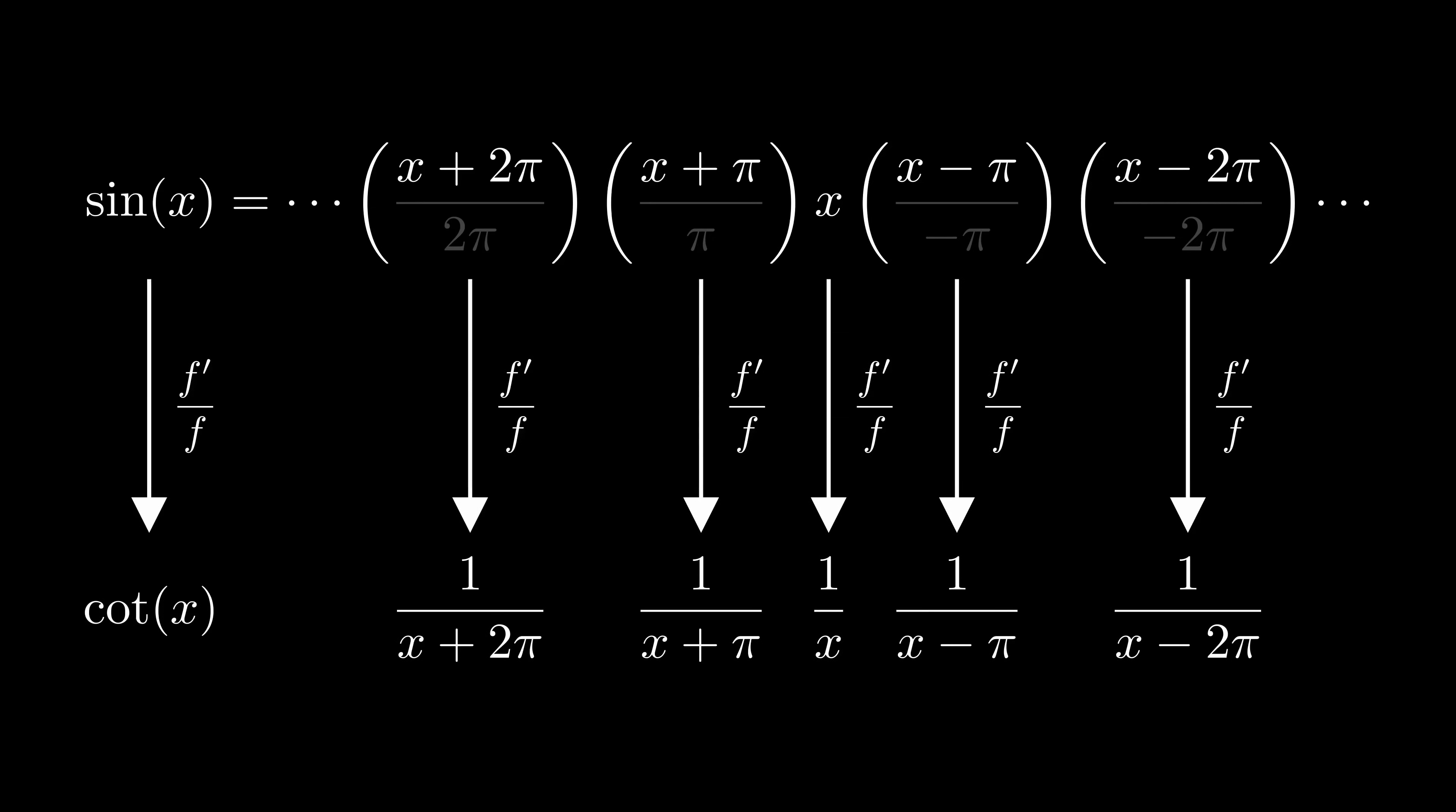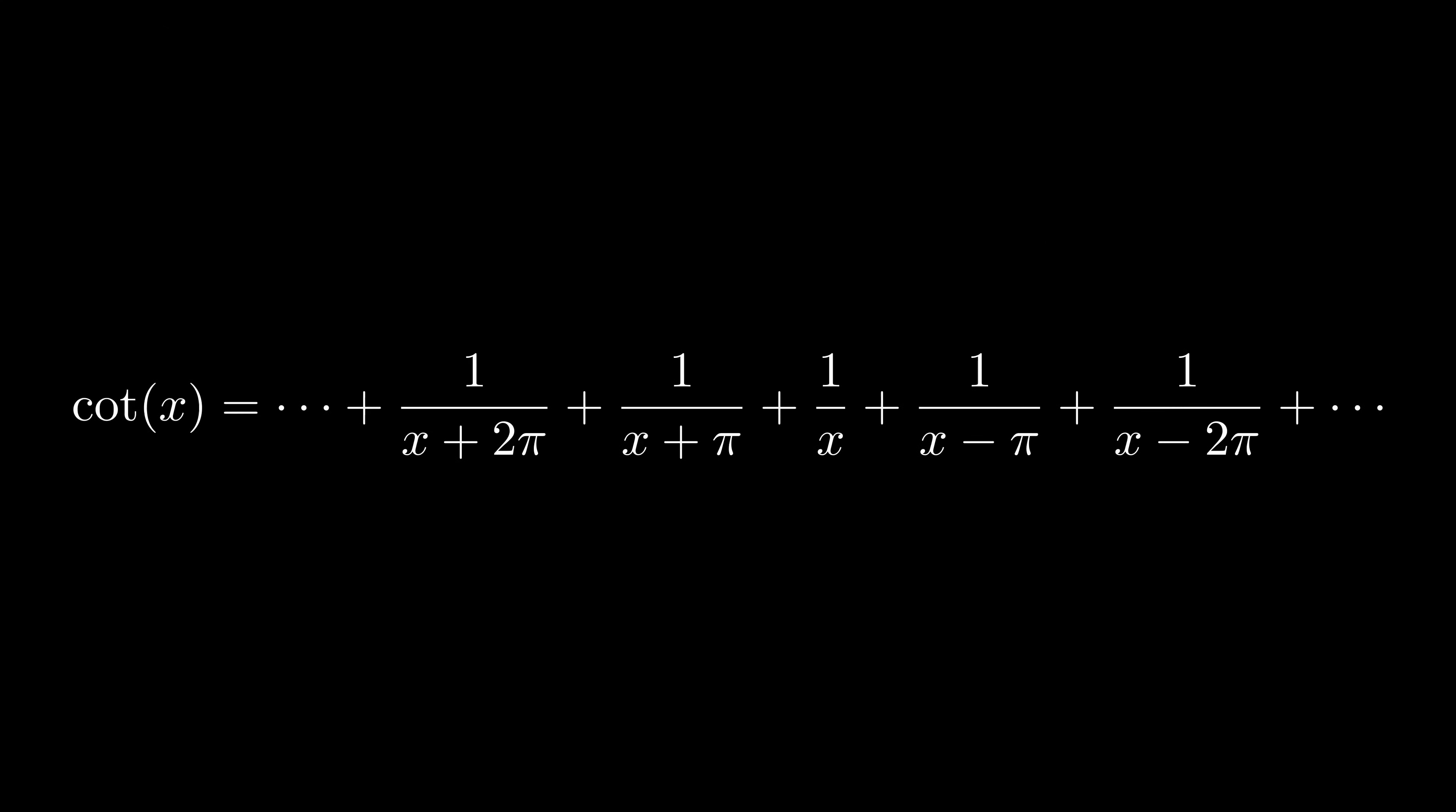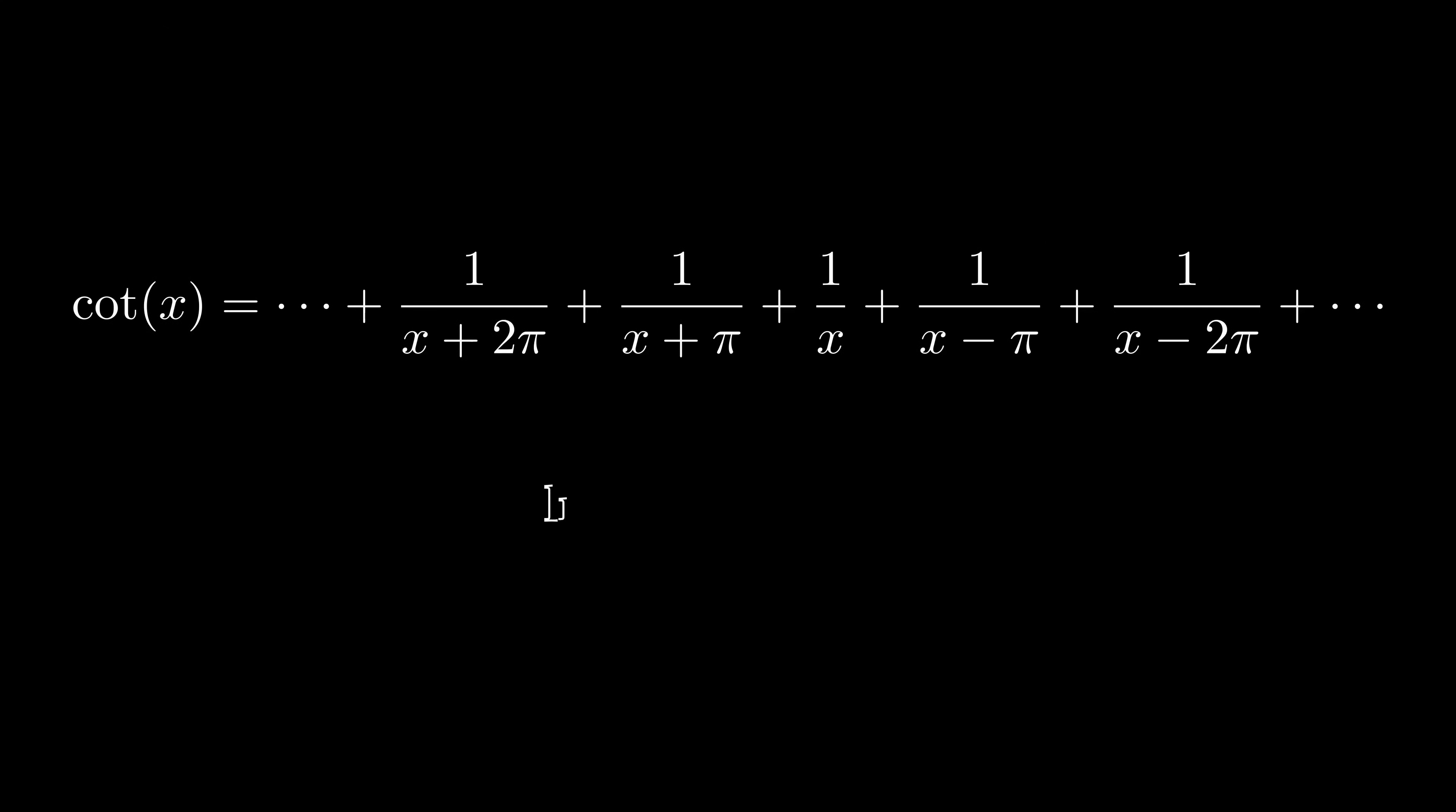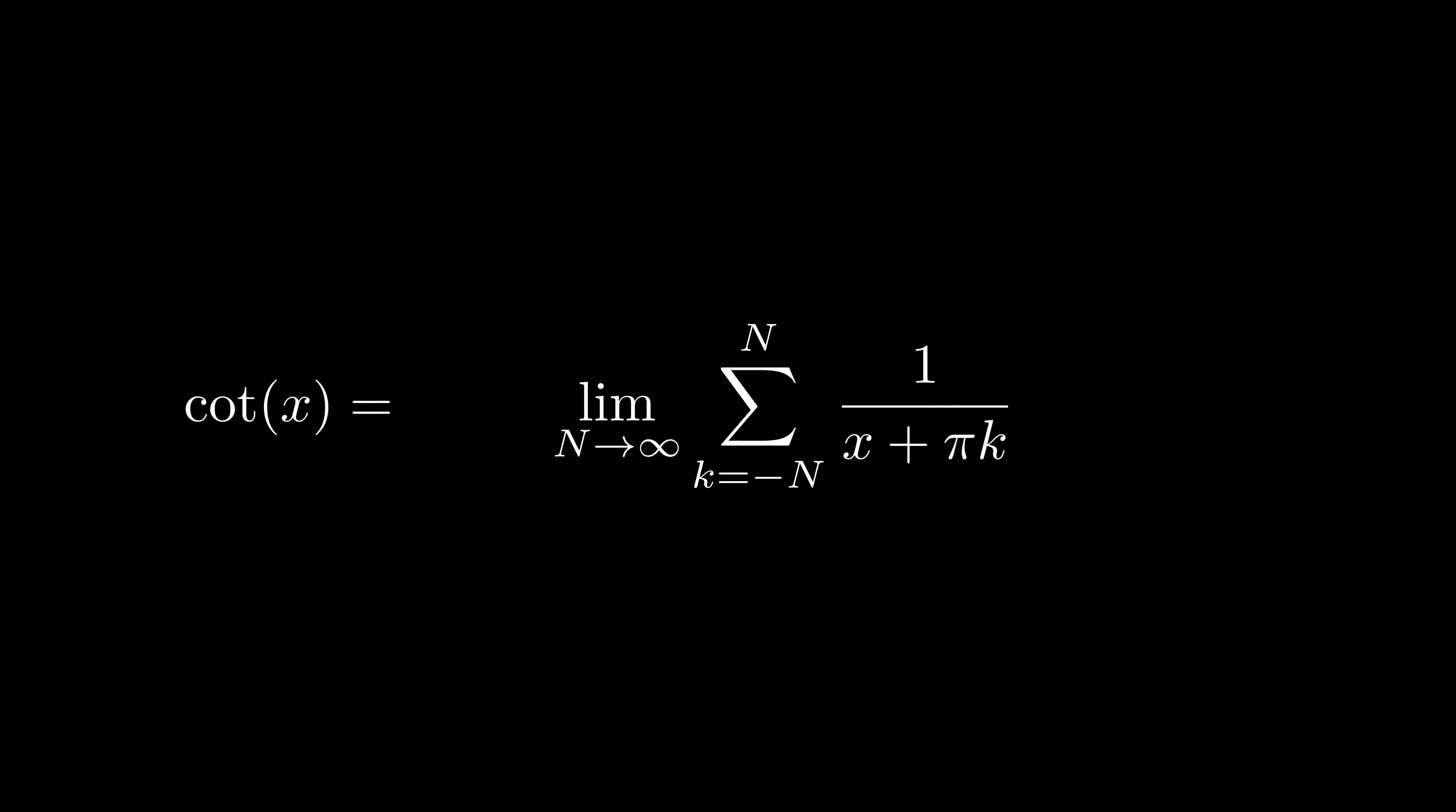So, adding them all together, this is the new cotangent formula. This one can be expressed as a sum really nicely. We're just adding up 1 over x plus pi k, with k going from negative n to positive n and taking the limit as n goes to infinity.